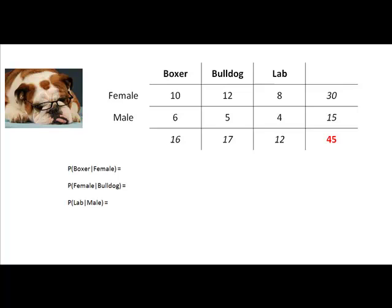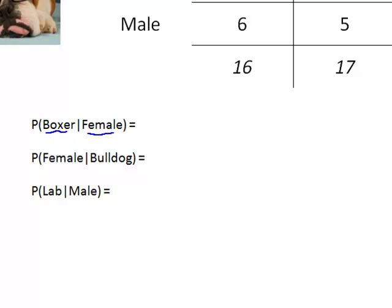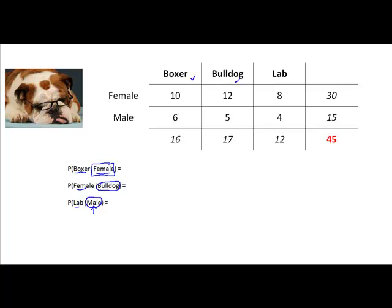A little bit more conditional probability, and this time we have dogs. We're going to work with the probability of a boxer given that it's a female, the probability of a female given that it's a bulldog, and the probability of a lab given that it's male. Remember that in conditional probability, what goes behind the line ends up on the bottom, or in the denominator of your formula, and the given reduces your sample space. I have boxers, bulldogs, and labs, and I have some females and some males.